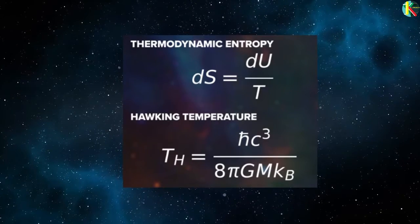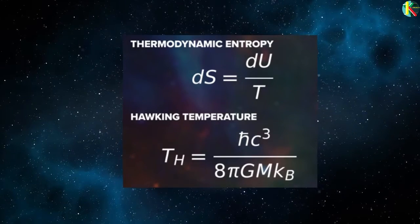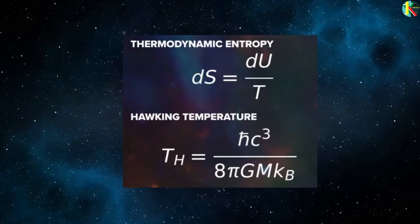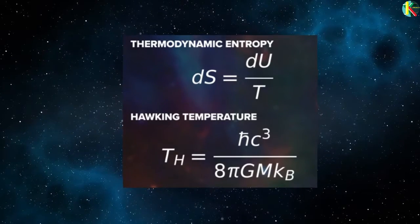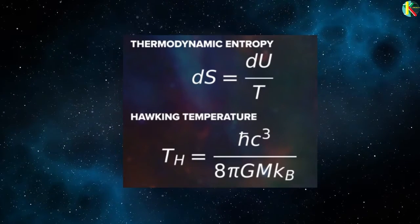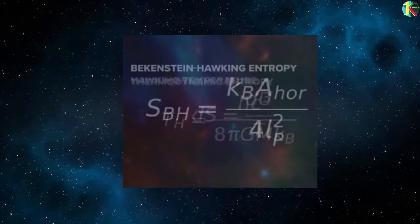Thermodynamic entropy tells us that changing entropy is changing internal thermal energy divided by temperature. So Hawking just plugged his Hawking temperature into that equation along with black hole mass for internal energy and figured out the total entropy contained in a black hole.